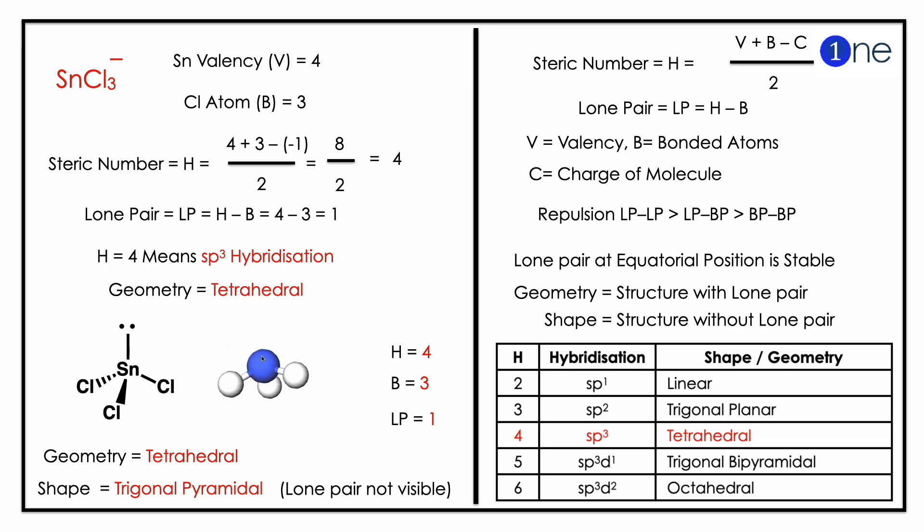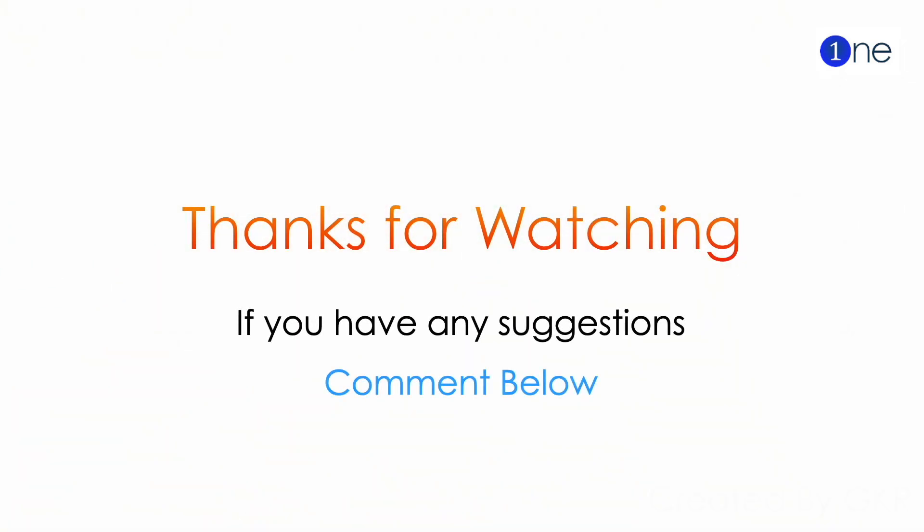This is because the lone pair is not visible, so the shape of SnCl3- is trigonal pyramidal. That's all from this video. Thanks for watching.